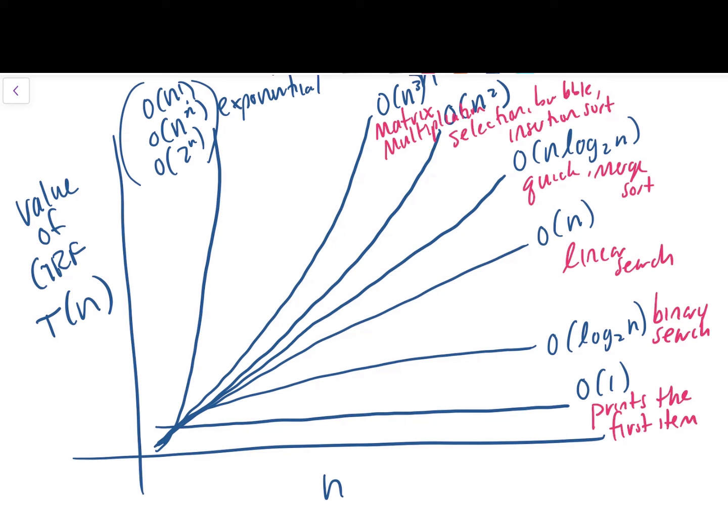Next, we have big O of n cubed. This is cubic time complexity. A classic example of this is matrix multiplication. With standard matrix multiplication, you have a for loop inside of a for loop inside of a for loop. So you've got double nested for loops, three for loops.